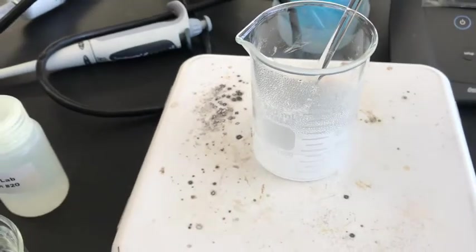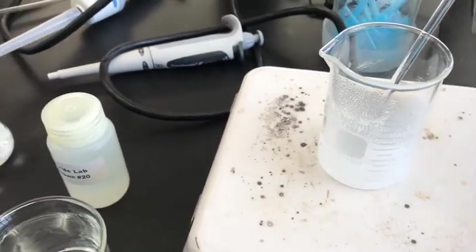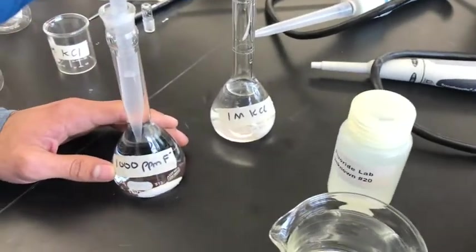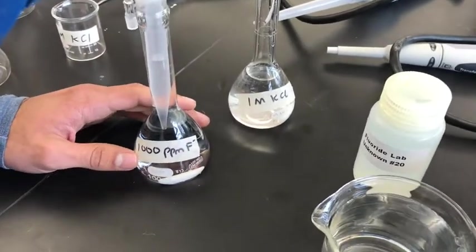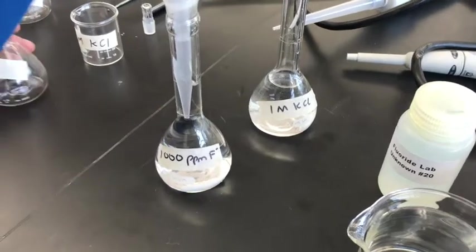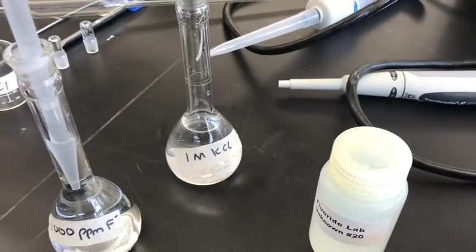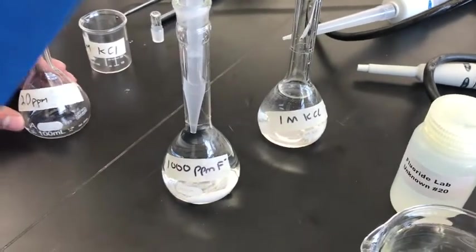Once sodium fluoride has been dried in the oven and brought back out and cooled, then we can prepare 1000 ppm of fluoride. Even for this, we still add 10ml of 1 molar KCl into this volumetric flask as well.